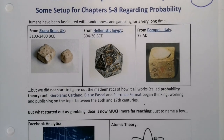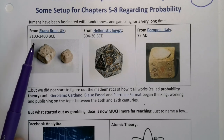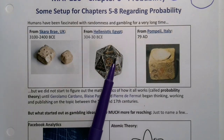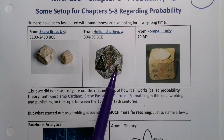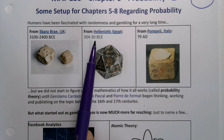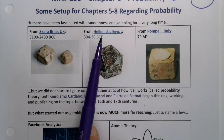Humans have been fascinated with randomness and gambling for a very long time. These dice were found at Skara Brae in the United Kingdom, and they date from 3100 to 2400 BCE. These are Hellenistic dice from Hellenistic Egypt. We don't actually know what all the symbols stood for, but they date from 304 to 30 BCE, because these are Greek symbols on the sides, so we know it was from Hellenistic Egypt.